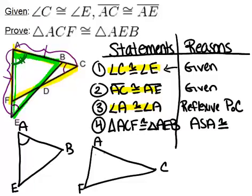So we knew that angle A was congruent to angle A because they're the same angle. And it was given that angle C is congruent to angle E, and it was also given that AC was congruent to AE.